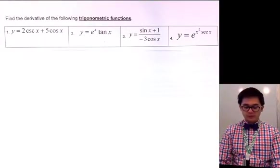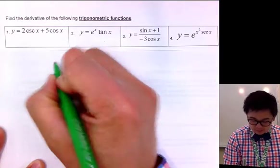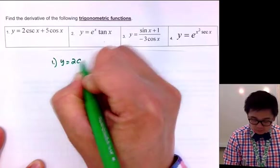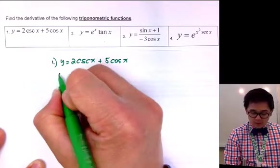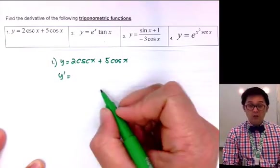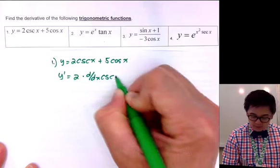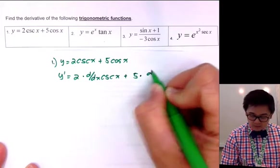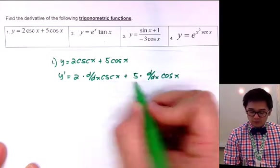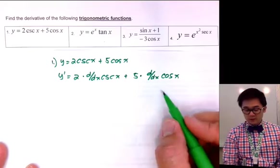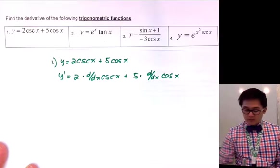Today we're going to be working on the derivatives of some trig functions, so let's start with problem number one, which is y equals 2 cosecant x plus 5 cosine x. To find the derivative of this function, all we need to do is take the derivative of cosecant x plus 5 times the derivative of cosine x. Notice that the two coefficients or constants of these functions are set aside.